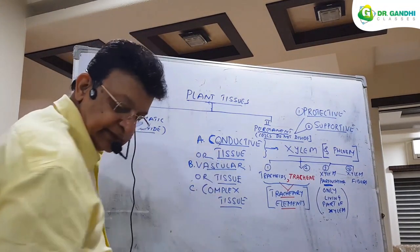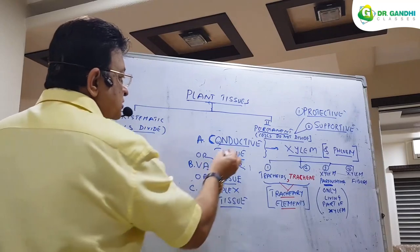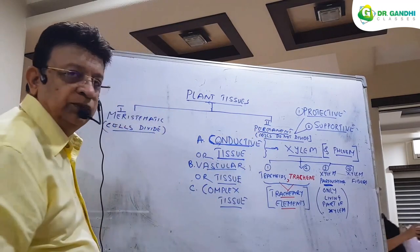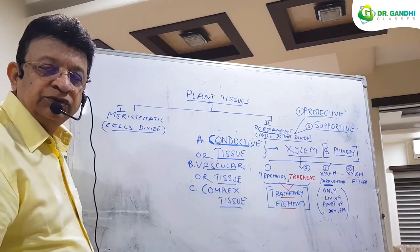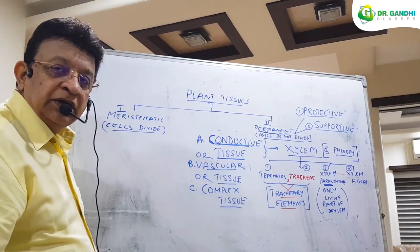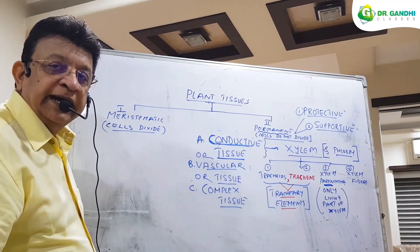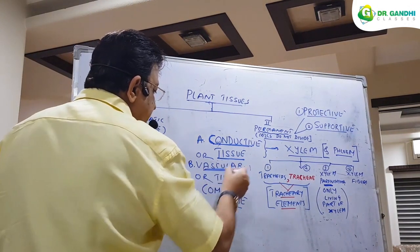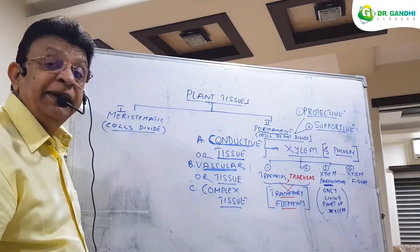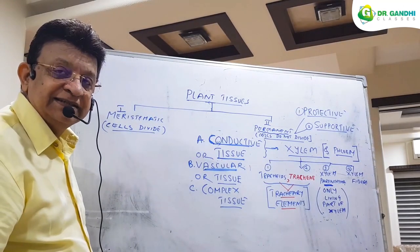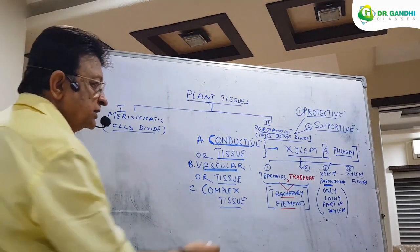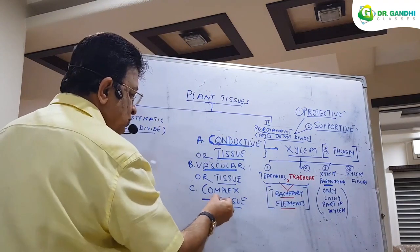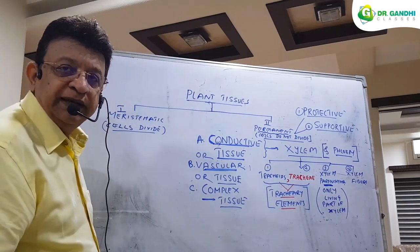We now begin the study of the last part of permanent tissue, called conducting tissue, because the tissue is used to transport water and food. It is also called vascular tissue because it is made up of vessels, and because it is made up of more than one type of tissue it is also known as complex tissue.